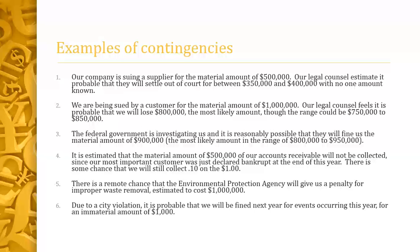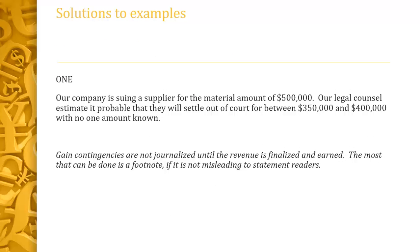Here are some examples of contingencies. In the first case, our company is suing a supplier for a material amount of $500,000. Our legal counsel estimates it's probable they will settle out of court for between $350,000 and $400,000, with no one amount more likely. We'll assume this is material; we've got a range, we can estimate it, and it's probable. However, since we are the ones suing, this is a gain contingency — and as mentioned, we're not going to journalize it until it's finalized, often when we actually collect the cash. Had we been sued, we would have had to journalize this.